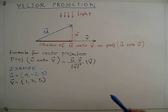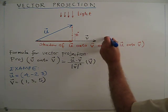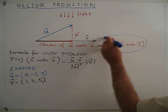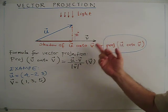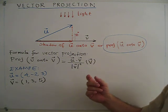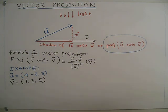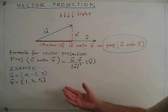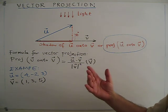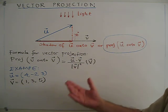We can write projection U onto V, so shadow of U onto V. The formula for this projection is: projection of U onto V equals U dot V divided by V squared magnitude, then vector V. I am not going to discuss how to get this formula, I just want to explain how to use the formula.